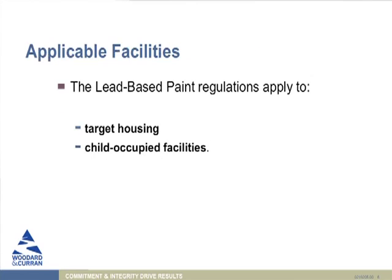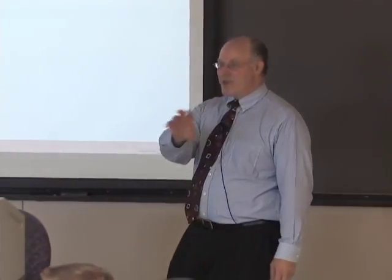The whole point of these regulations — we're going to zero in on two key areas: what's called target housing, where people live, and child-occupied facilities, where children spend a considerable amount of time. Those are the two key areas on any campus. What are we breaking the line at in age of child-occupied facilities? Great question, and I'm going to get to that in just a minute. The question is, what's the age of the children that we're talking about?